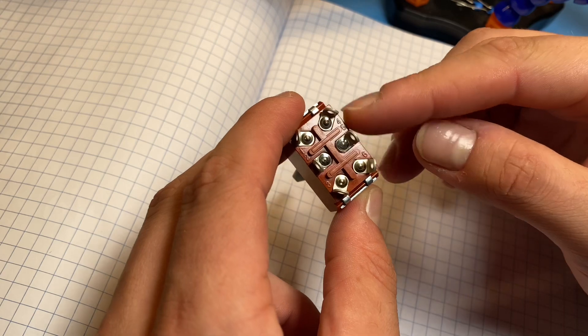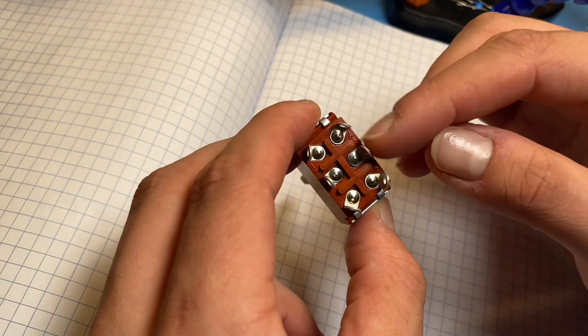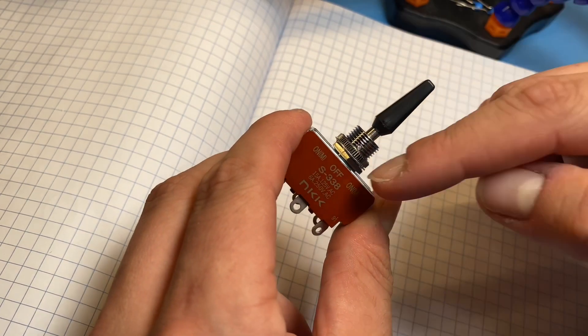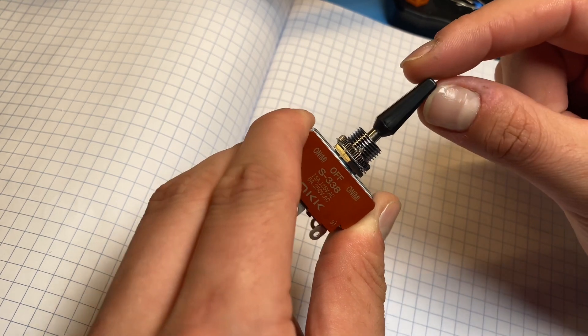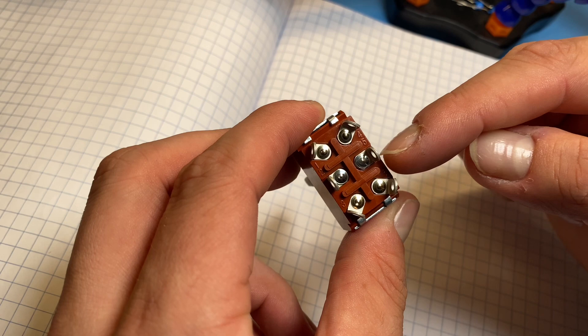So this switch is a double pole, double throw momentary switch. That means that there are two independent sides, and that as we actuate it, both sides will be actuated at the same time. And it's momentary as it always sits at the off position in the center, and then we either go this way or that way, and it'll activate either this side or that side, connecting it with the middle.